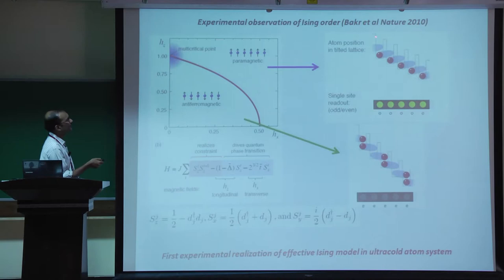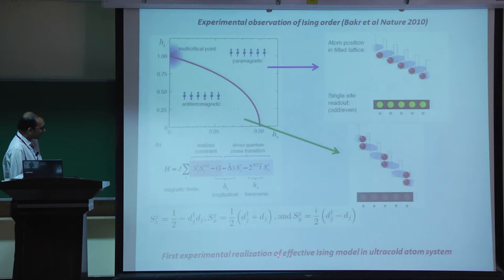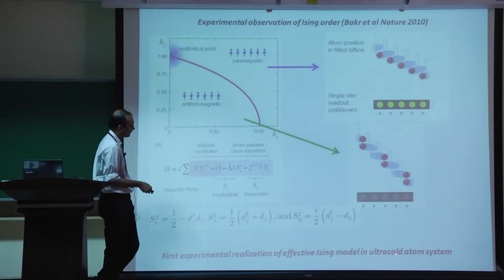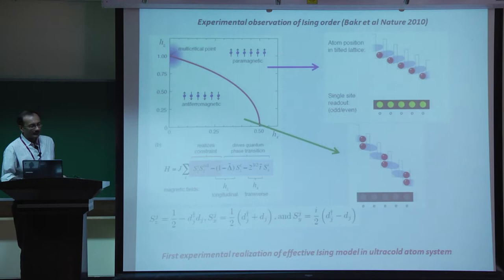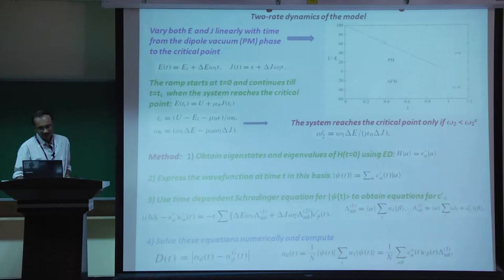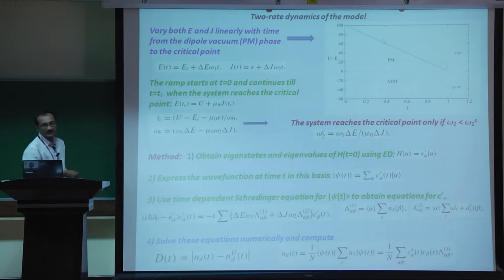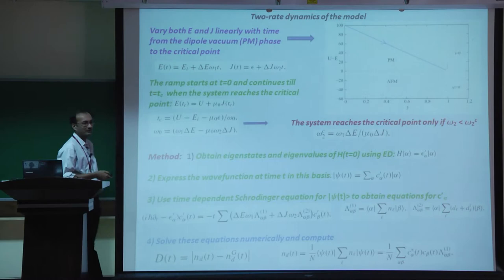This was experimentally realized in Greiner's group at Harvard, who observed this phase in a spin language and presented it as the experimental realization of an effective Ising model in ultracold atoms. I now want to take this dipole model and study it with the two-rate protocol: varying the electric field (by varying the tilted magnetic field) and the hopping J (by controlling the depth of the optical lattice).